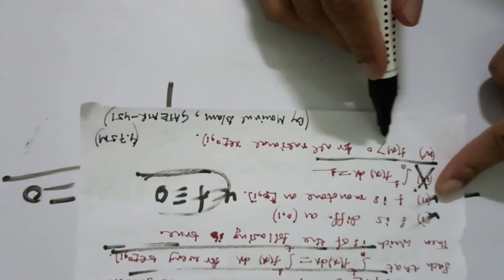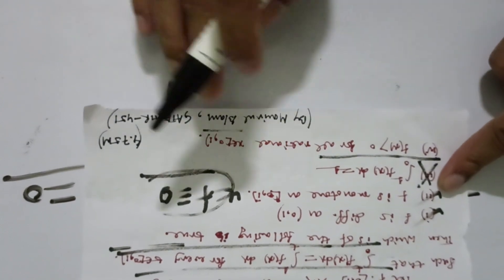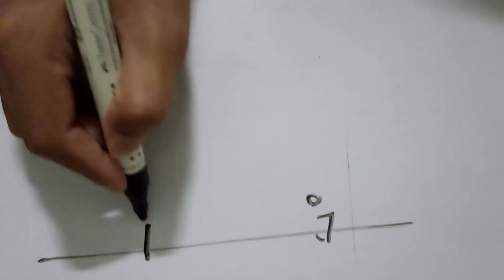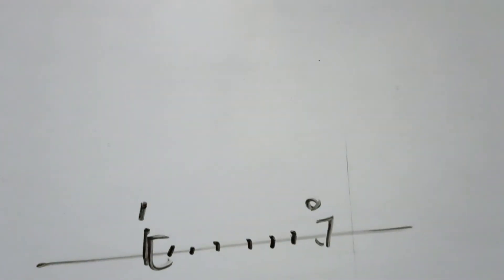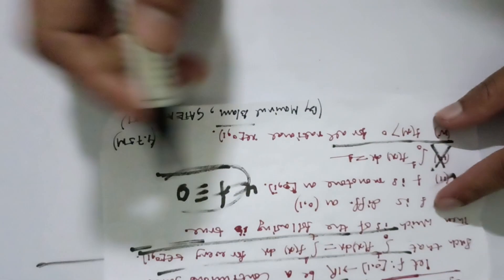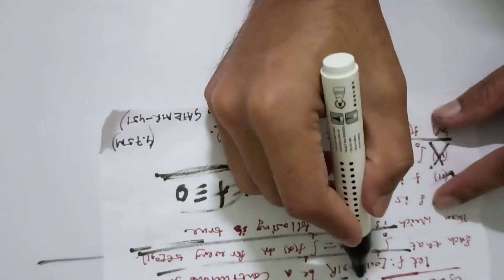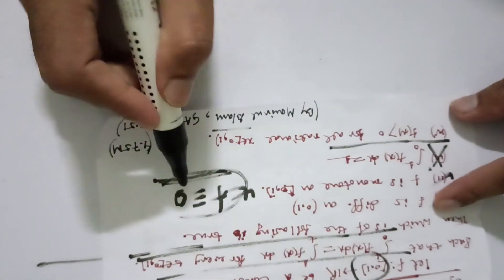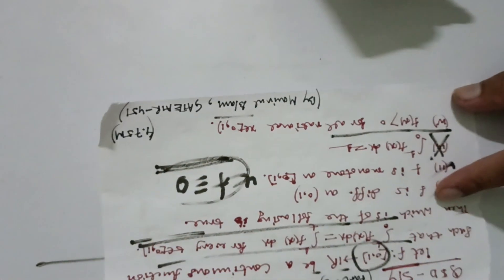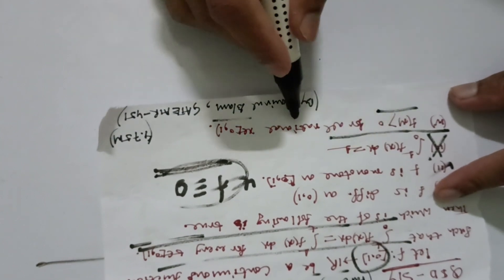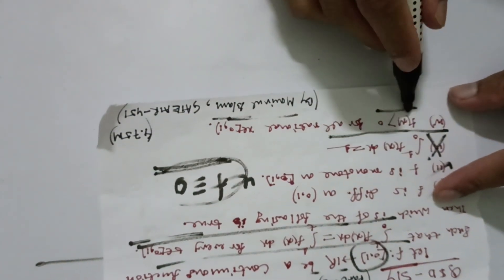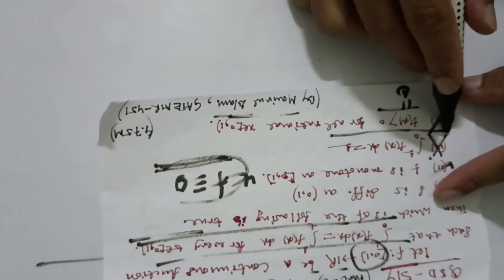Now the fourth option: F(x) > 0 for all rational x. This is also not possible. We proved F(x) = 0 on the entire domain [0,1]. So F is identically zero on [0,1], not just on rationals. If F(x) = 0, it is zero everywhere, not positive. So option 4 is also not correct.